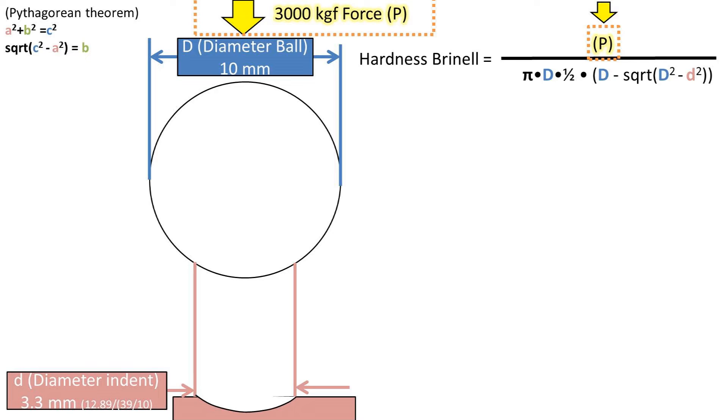So the Brinell hardness equation is the load, which typically is 3000 kilograms of force and is typically applied for about 30 seconds or so, divided by pi times the diameter, which is the circumference of the 10 millimeter ball,